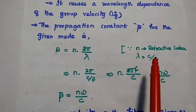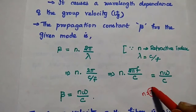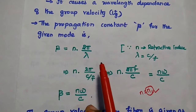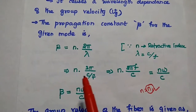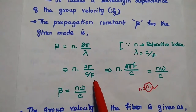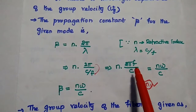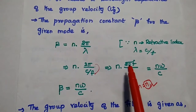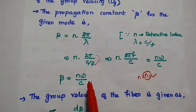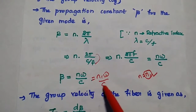Since λ = c/f, we substitute this value. Then beta equals n times 2π divided by (c/f), which gives n times 2πf/c. Here, 2πf is nothing but omega (ω). So beta equals n·ω/c, which can also be written as n1·ω/c, where c is the velocity of light.